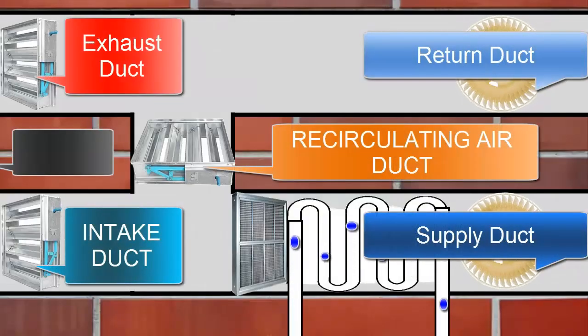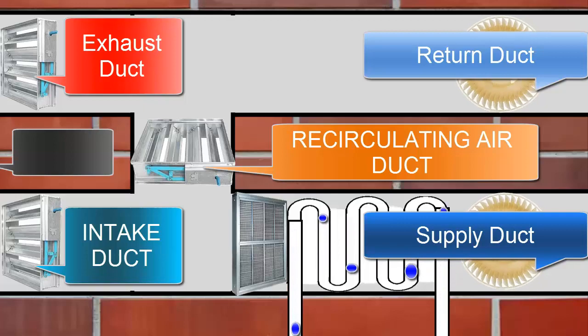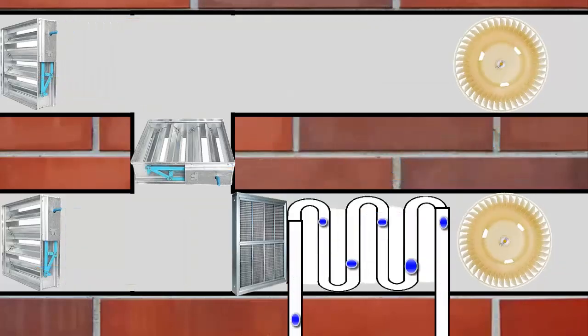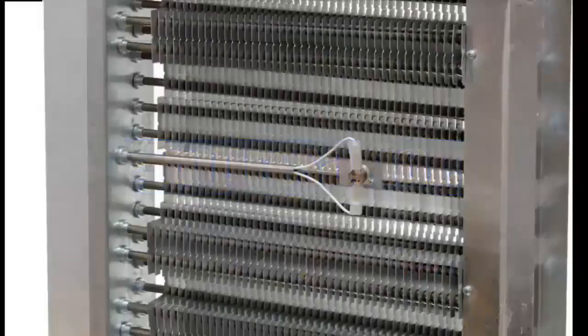Then we have ducts that send air around the building to designated areas. We will also have some ducts for return air, which carries all used air out of the building back to a separate part of the flow.